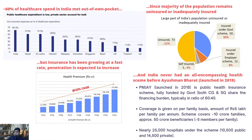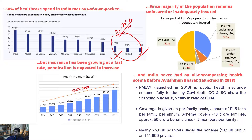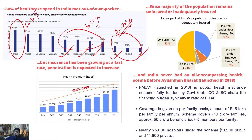An important thing to note is that healthcare has always been understood as something that should be taken care of by government, which is what happens in most countries. In the US and UK, out-of-pocket expenditure ranges at around 10–20%. Even in Malaysia, Indonesia, and Singapore it is roughly 30–35%. But in India, that number is very high — around 60–65% of overall healthcare expenditure is met by the patient himself.